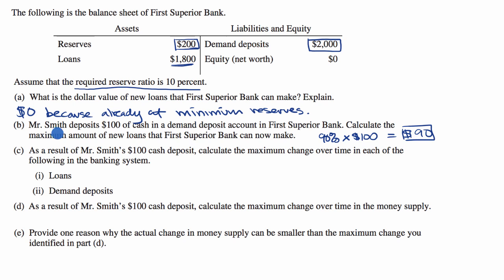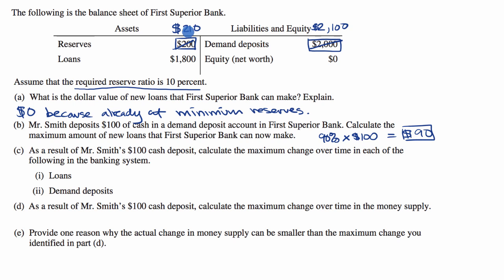Another way to think about it: after Mr. Smith's deposit, the demand deposits go to $2,100, and that increase in liabilities is offset by an increase in assets — reserves go from $200 to $300. Now First Superior Bank is clearly above its minimum reserve requirements: $300 over $2,100 is more than 10%. It has to keep 10% of $2,100 as reserves, so it needs to keep $210, and the other $90 it could loan out, bringing loans to $1,890. So it can make $90 in new loans.